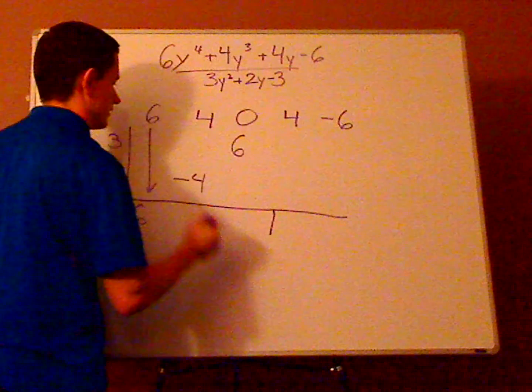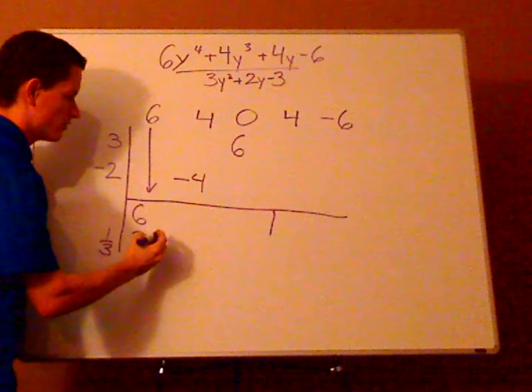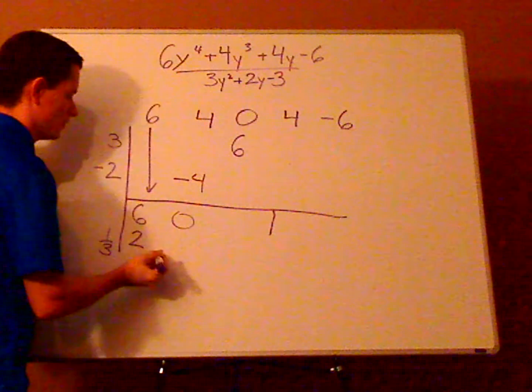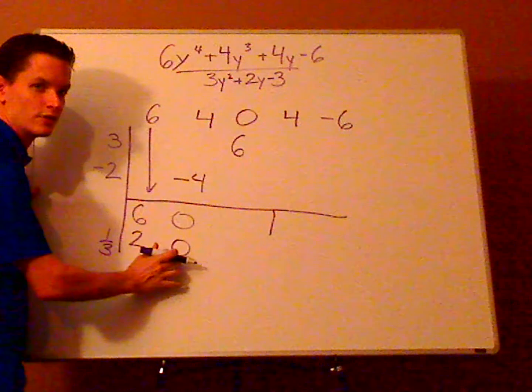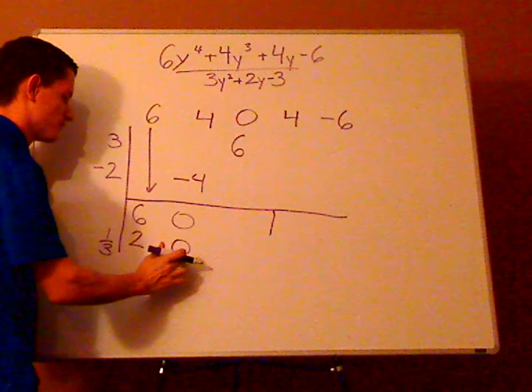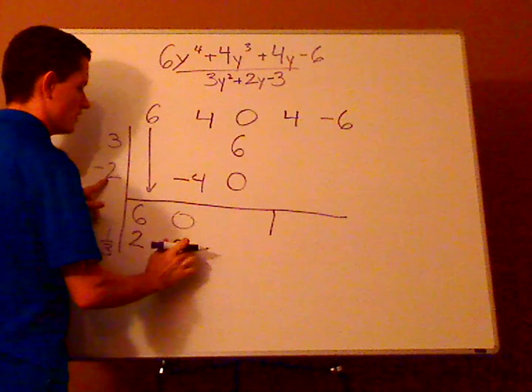All right, so add 4 plus negative 4 is 0, and then 0 times 1/3 is 0, and that's what goes here. So you do the same thing: 0 times negative 2 goes here, and then 0 times 3 goes there.